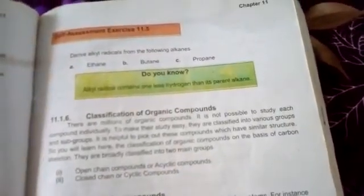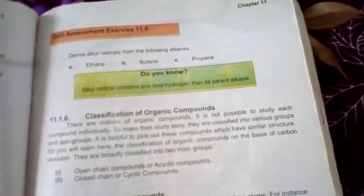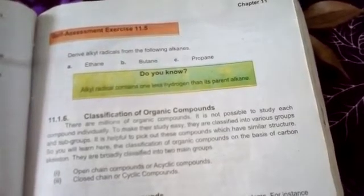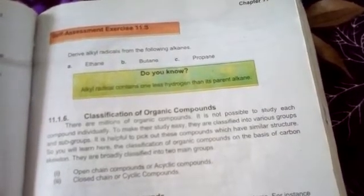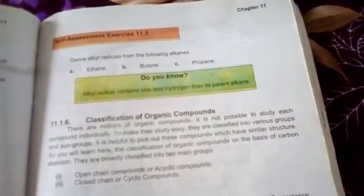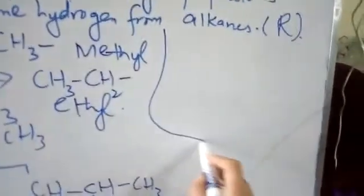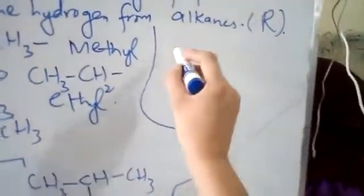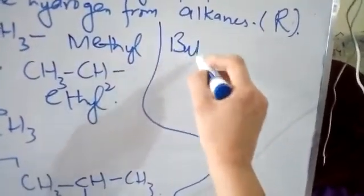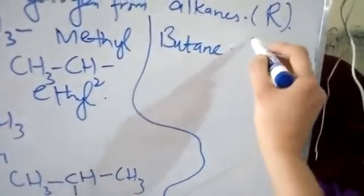Similarly, in your book there is the self-assessment exercise 11.5: derive alkyl radicals from the following alkanes — ethane, butane, and propane. We have already done ethane and propane, so let's consider the next example, which is butane. Butane's molecular formula is C4H10.